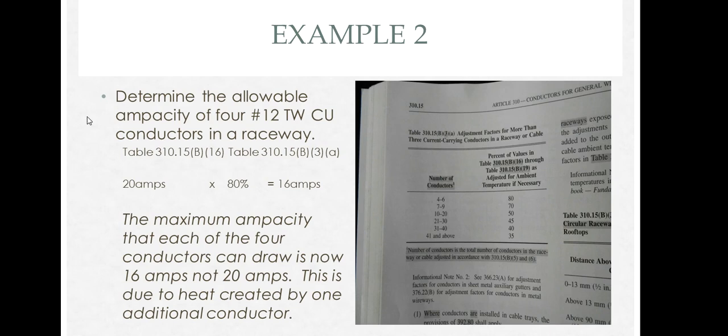In this first example, determine the allowable ampacity of four number 12 TW conductors in a raceway. From Table 310.15(16), we get the ampacity of 20 amps. Because there are four current carrying conductors in a raceway, we must derate that ampacity by 80%. That adjustment factor is found at Table 310.15(B)(3)(A). Based on the quantity of conductors, you have to derate them a certain percentage.